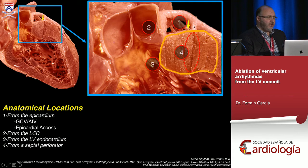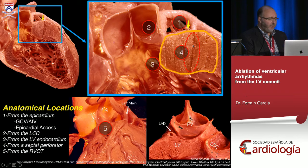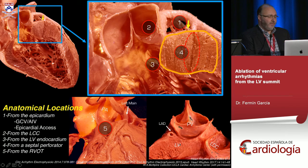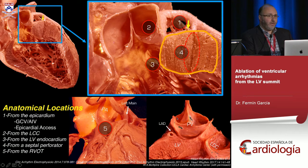This artery has a septal perforator, so you could map or ablate from inside the septal perforators, from the artery or veins. Also, don't forget the right ventricle — the RV septal wall is very close to the LV wall. Some arrhythmias that look like typical RV outflow tract could actually be closer to the LV area and could be ablated right below the pulmonic valve.